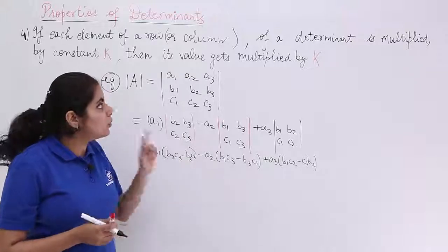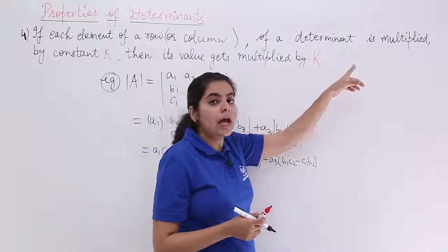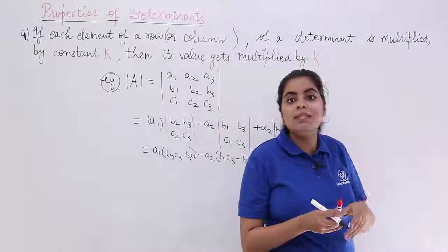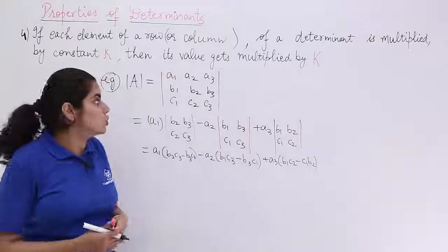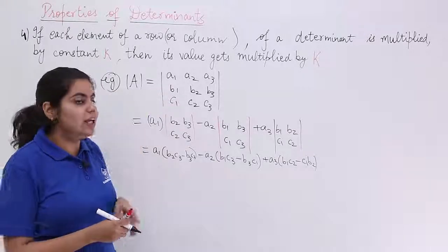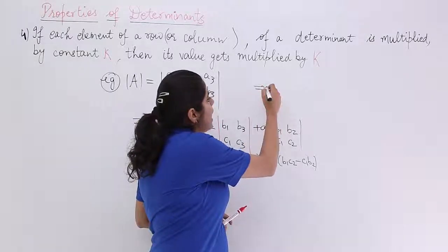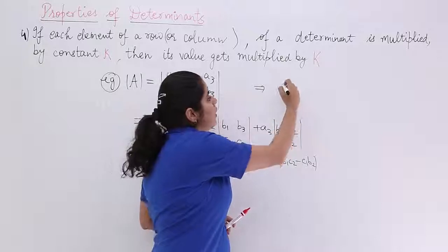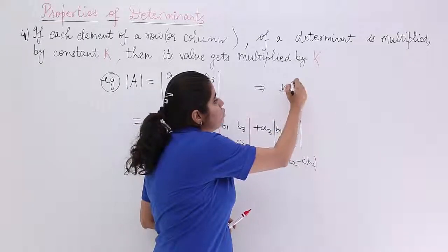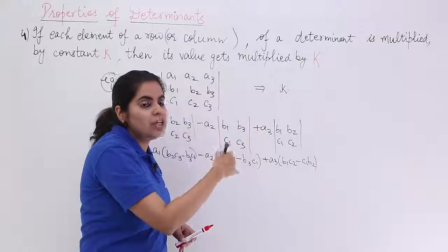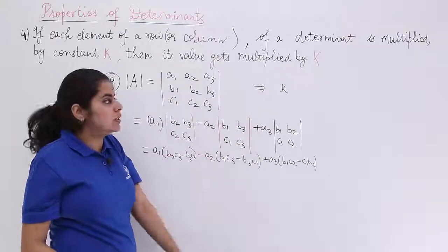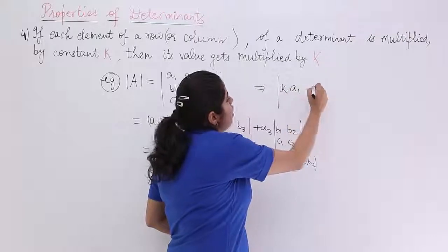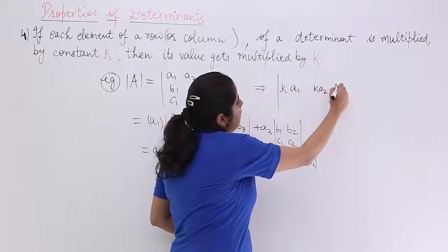Now, what is the property? The property says if each element of any row or column is multiplied by a constant. So, let's do that. And let's see what is the change. I have A here. Now, I have a new thing which is called as say K into something. So, K into a constant is there.